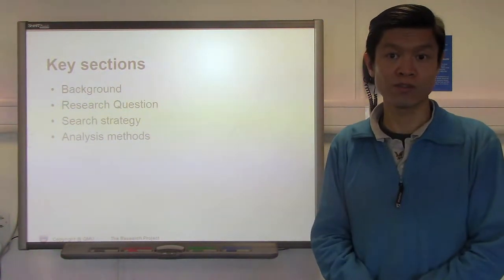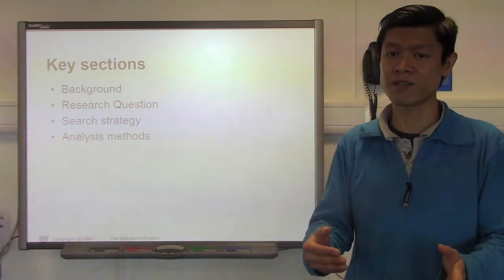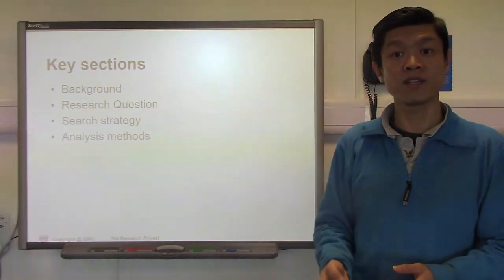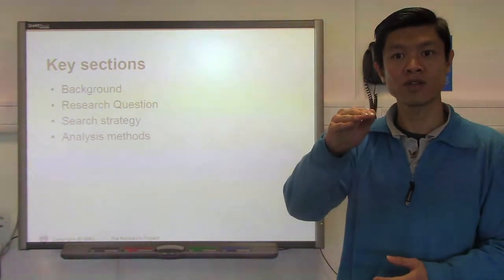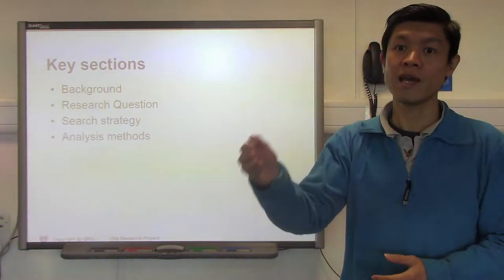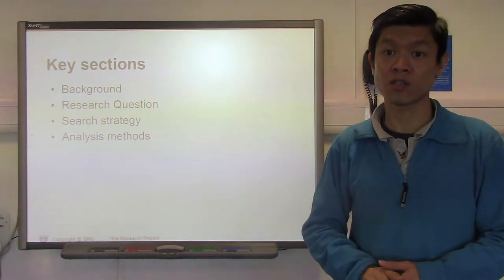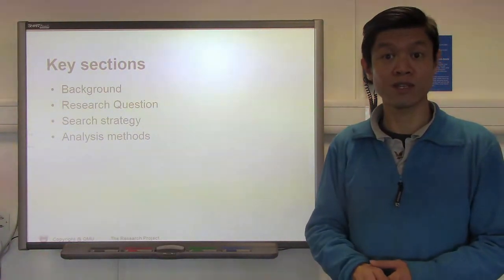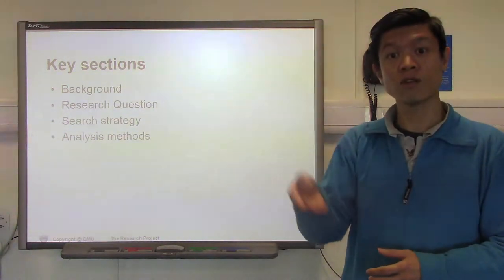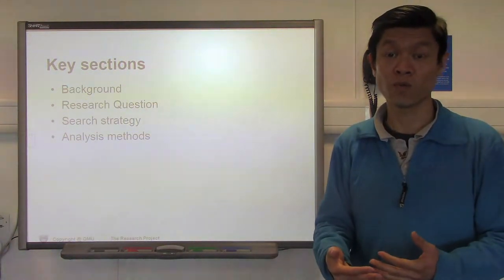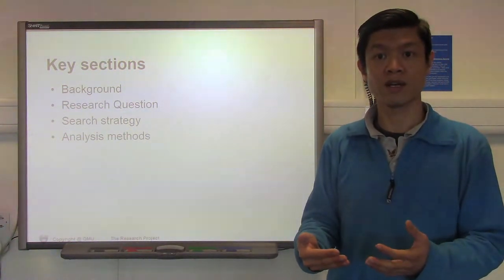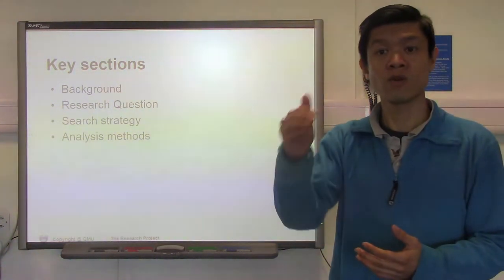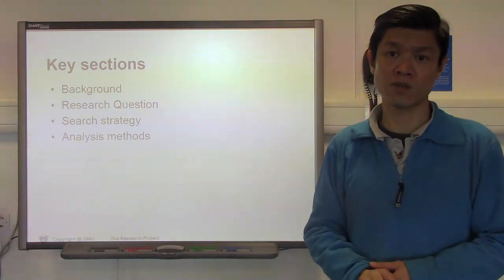Of course, you then need to have a discussion with your supervisors in order to see what is appropriate and to change your approach if necessary. Within the background itself, you have to tightly link all the evidence that you've provided to pinpoint your knowledge gap and link it back to the research question you're trying to address for your systematic review. If these two are not linked, the reviewers will come back to you asking for the context and justification of your research question.